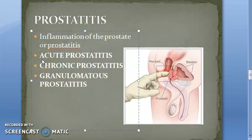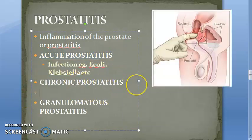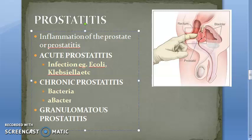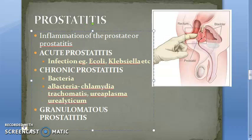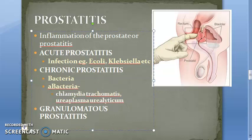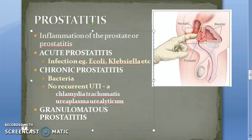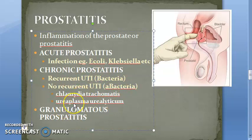The pathogens causing acute prostatitis include E. coli, Klebsiella, Proteus, Pseudomonas, Enterobacter, Gonococci, Staphylococci, and Streptococci. In chronic prostatitis, it can be bacterial or it can be caused by organisms such as Chlamydia trachomatis and Ureaplasma urealyticum — these are all bacteria, but they are grouped separately.